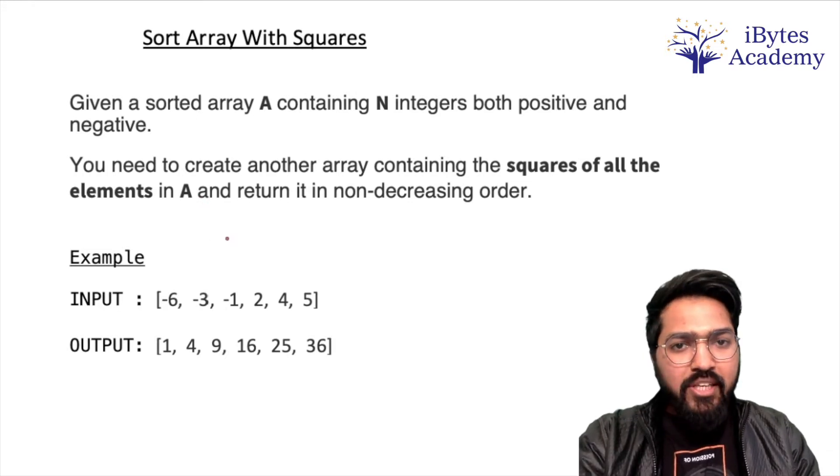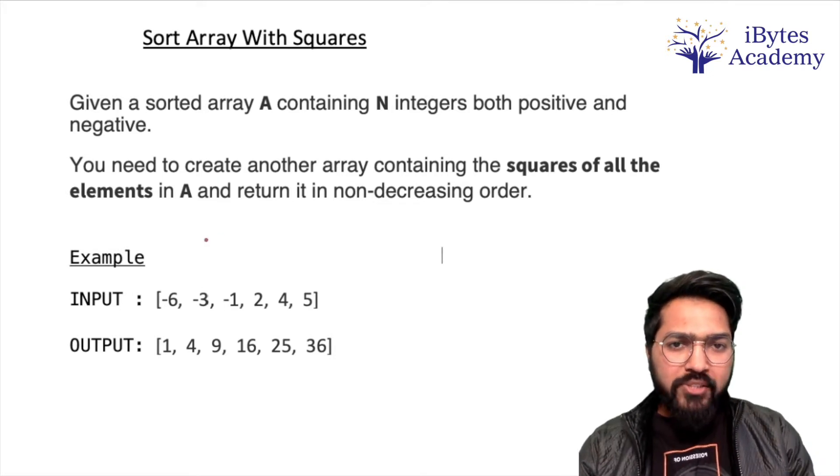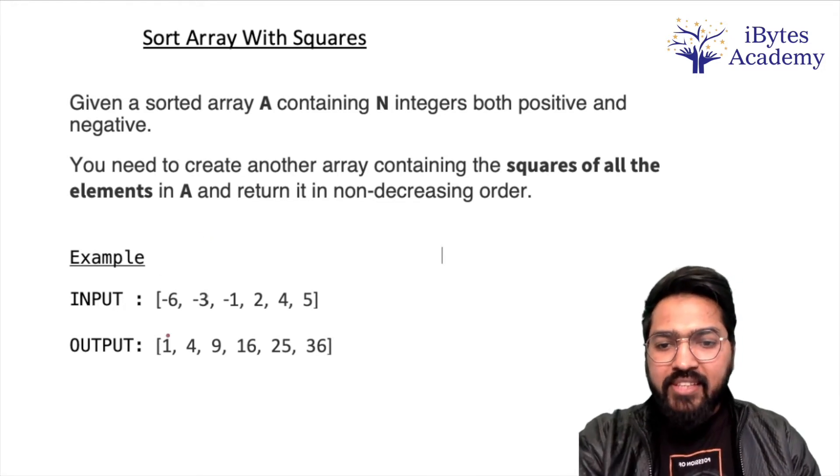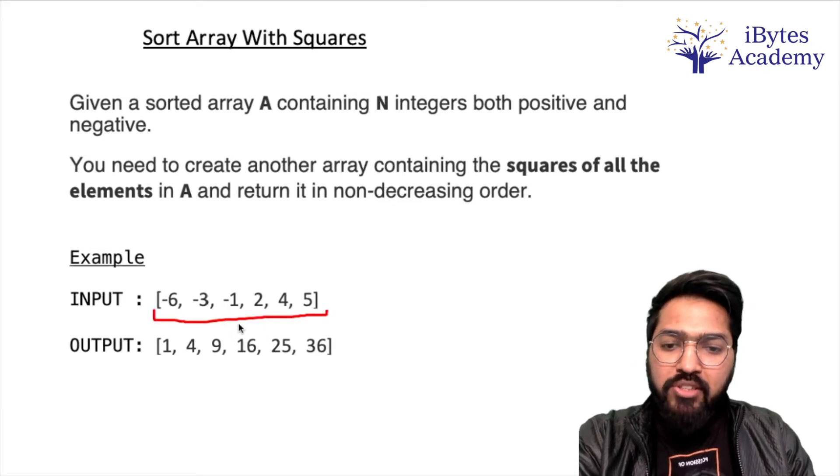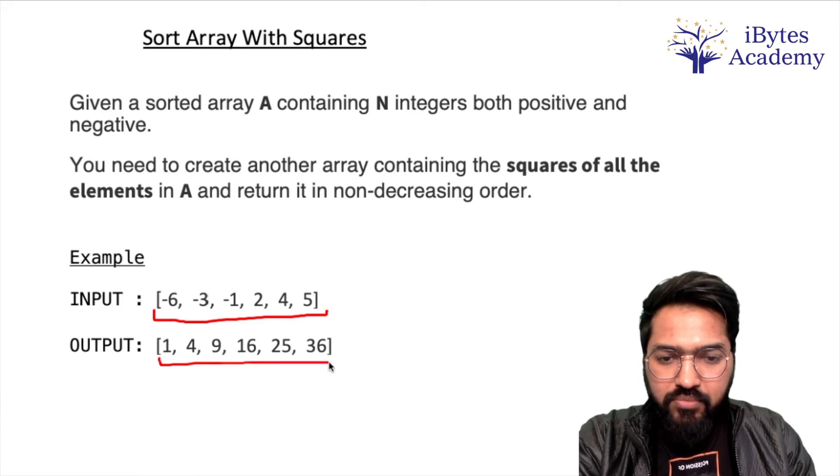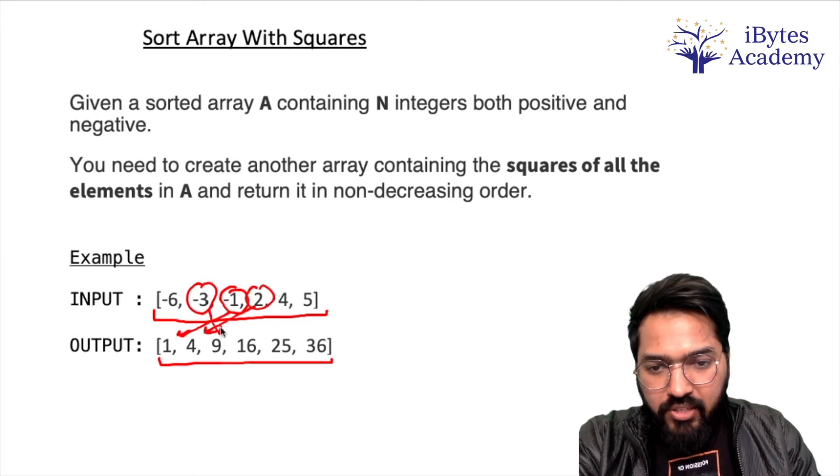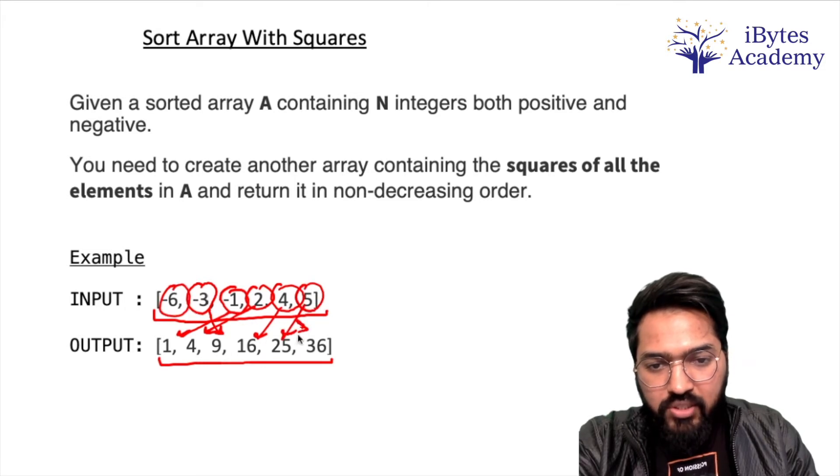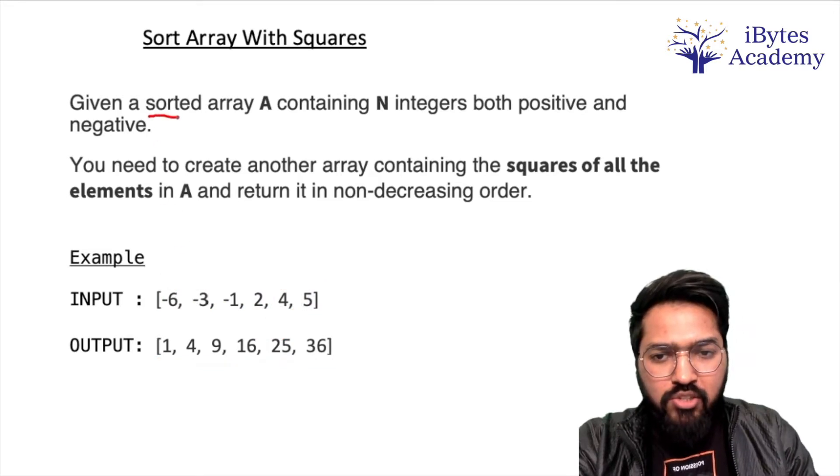Basically humko ek array melega us mein negative numbers bhi honge positive numbers bhi honge humko unke squares ko sorted order mein return karwana hai. Let's see the example. In this example this is our input array and the square of all of them in sorted order is our output array. Iska square yahan ra hai, iska square yahan ra hai, phir iska square yahan ra hai, then iska square yahan ra hai, 5 ka square 25 and minus 6 ka square 36.